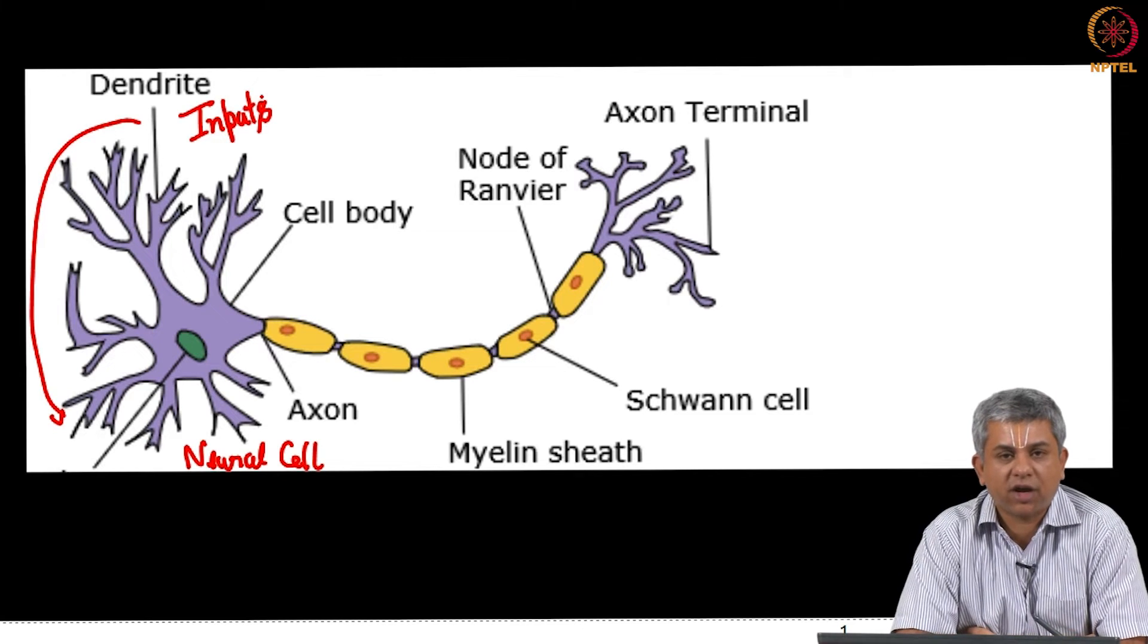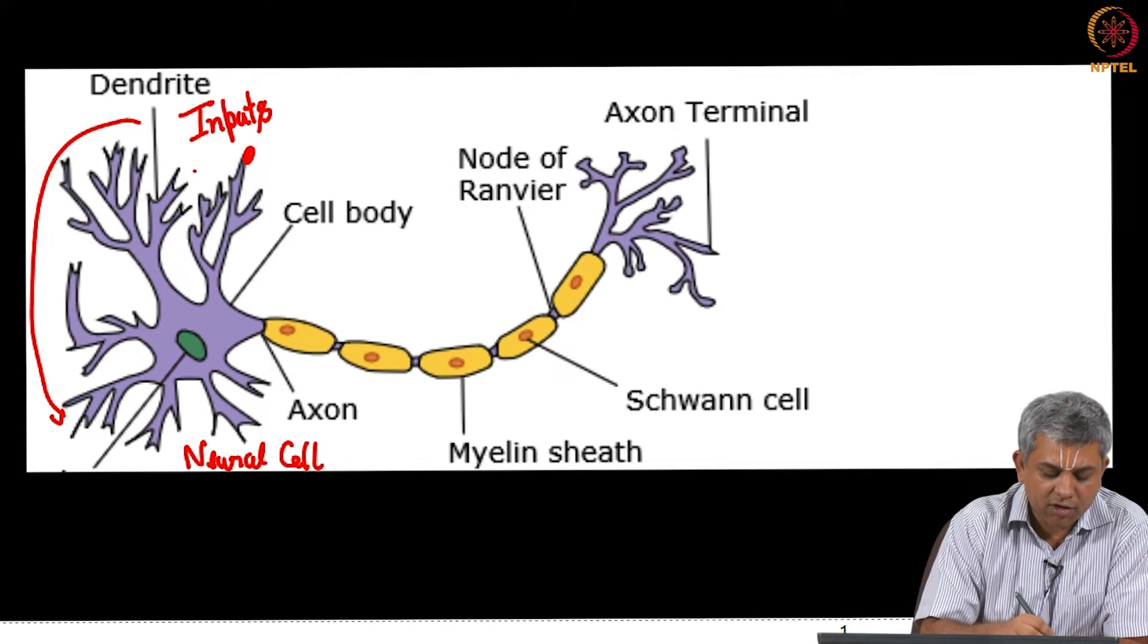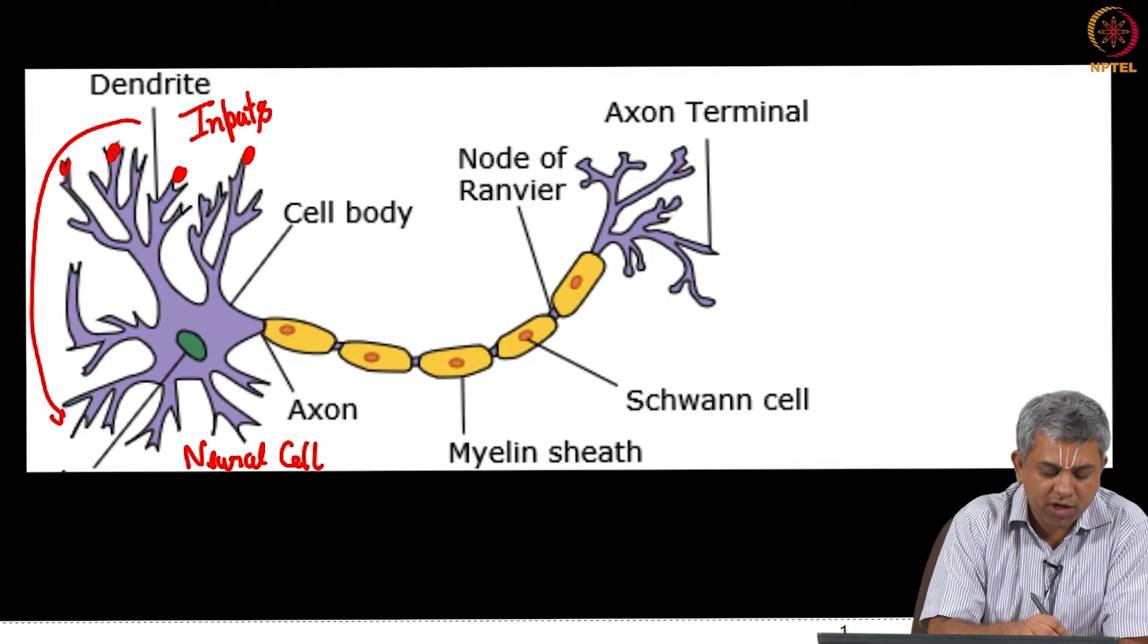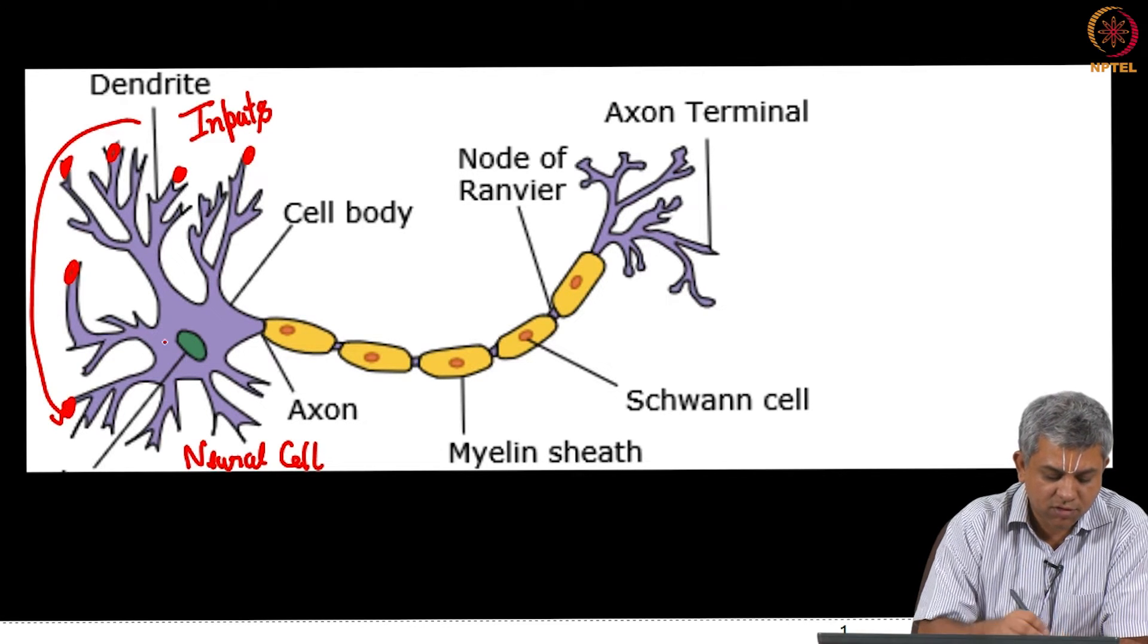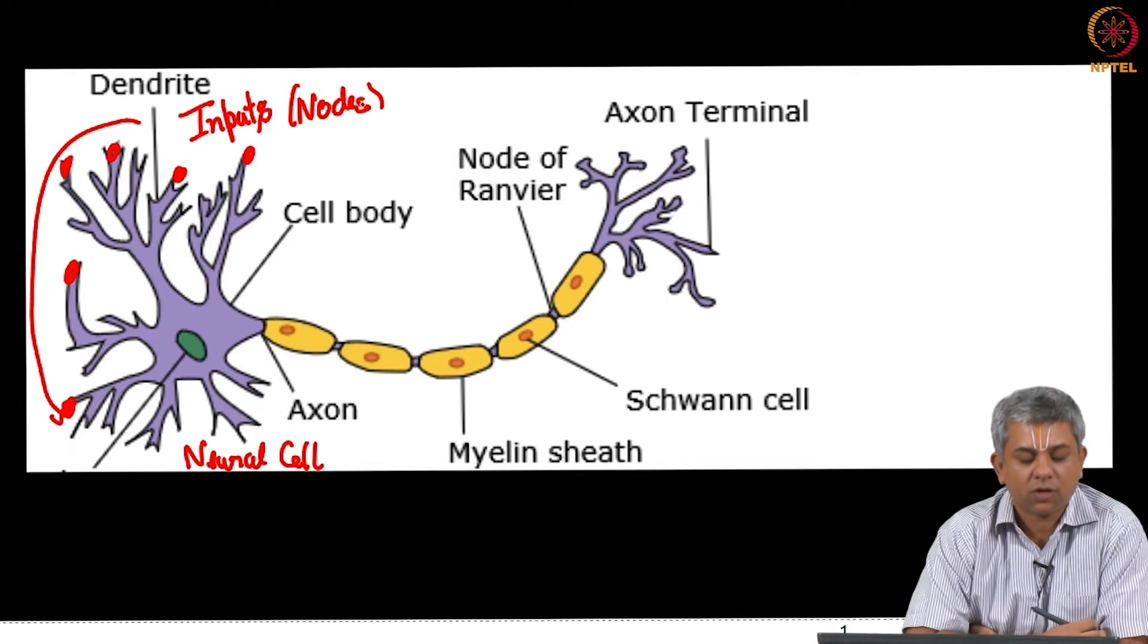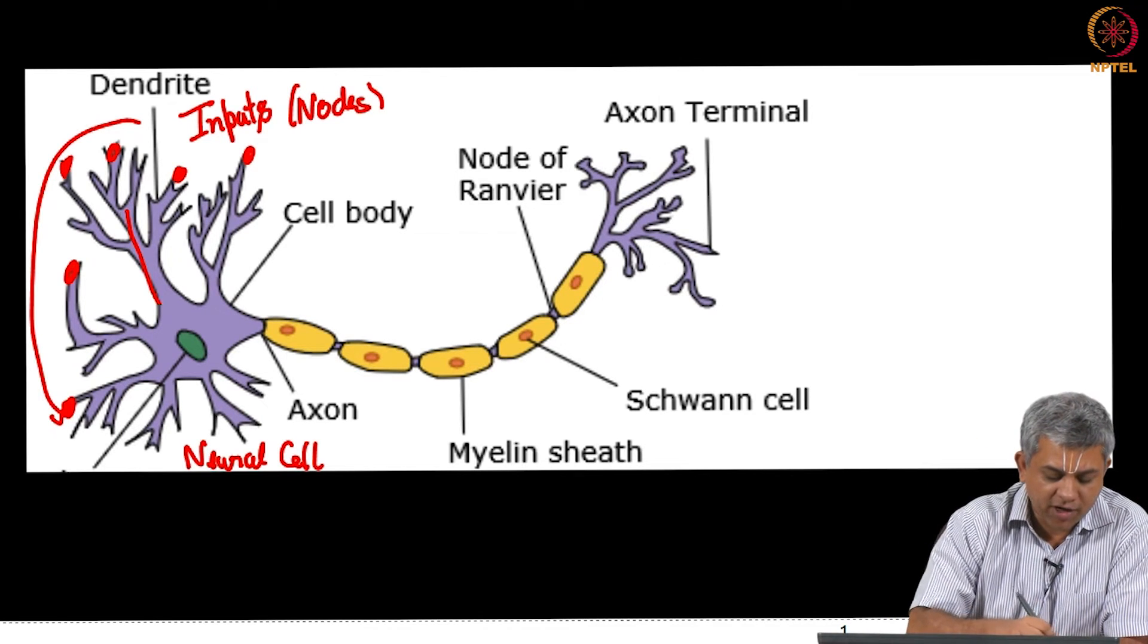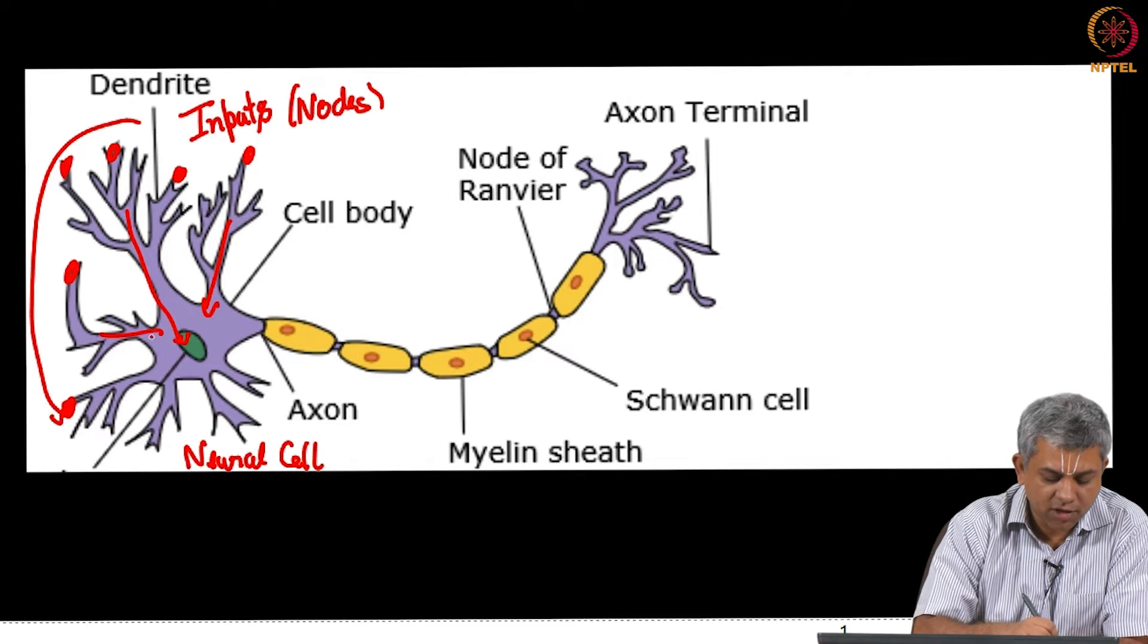Let us take the analogy of an eye. Just like in an image you have pixels, a lot of information comes from various sources. So we can see input nodes, these are called dendrites, and all these finally feed into one single neuron.